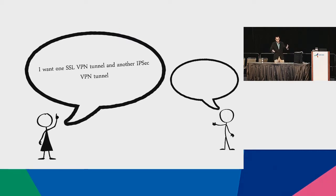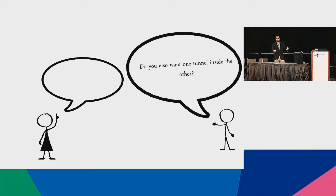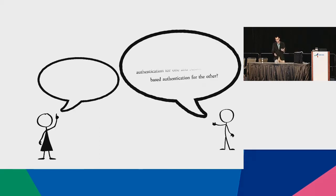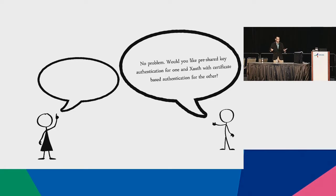This is the Knox engineer having a conversation with an administrator. She asks: 'I want an SSL VPN tunnel, I want an IPsec VPN tunnel, can I have both?' I say, sure — you can have one tunnel inside the other too if you want. 'I would like flexibility in the integrity encryption algorithms I use because I'm working with a DOD customer who has specific AES suite B compliant protocols.' I said, sure, no problem. We have pre-shared key authentication, X-auth based authentication — you go on and fill out a checklist. Pretty much you have an existing deployment or network application which we are already integrated with, which can solve your problem.